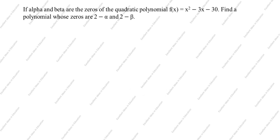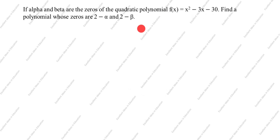Hi friends, welcome to my channel Excellent Ideas in Education. Today we are going to solve this polynomial problem. If alpha and beta are the zeros of the quadratic polynomial f(x) = x² - 3x - 30, find a polynomial whose zeros are 2 minus alpha and 2 minus beta.